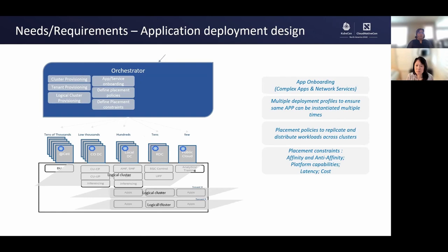The next step is to onboard the microservices with the orchestrator. Along with the microservice, some profiles also need to be onboarded, which will help to deploy these microservices on different types of clusters. The placement policies are also required to be defined so that the orchestrator can make the best decision to place the microservices on the best possible clusters. Some of the microservices may have placement constraints like platform capabilities, latency, and cost, and the orchestrator should be able to find the best cluster for each microservice.